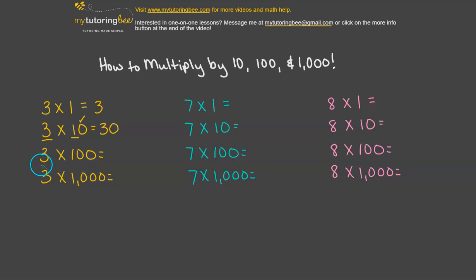3 times 100, we're going to use that same method. 3 times 1 is just 3. And then in 100, we have two 0s. So we're going to put two 0s on the end. So that gives us 300.